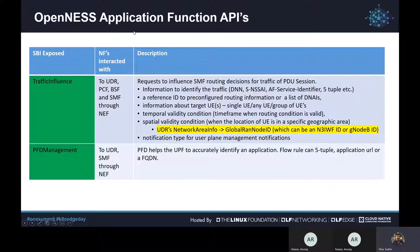The OpenNESS application function provides APIs for traffic influencing. The OpenNESS AF interacts with the UDR, PCF (the policy control function), binding support function, and the session management function of the 5G core networks through the network exposure function. OpenNESS provides a reference network exposure function and can also work with a third-party network exposure function. Through traffic influence, OpenNESS AF can influence traffic steering to edge locations — based on traffic information, for a single device, a group of devices, or any devices. You can also set temporal validity to specify at what time or duration you want the traffic steering to be enabled.